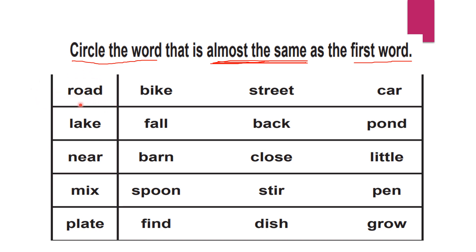The first word here is 'road' — r-o-a-d. The options given are bike and car, but those are vehicles, not synonyms. The other meaning of road is 'street,' so we will circle the word street.